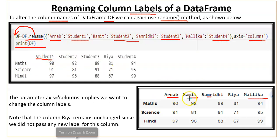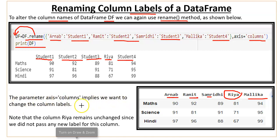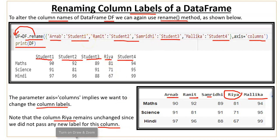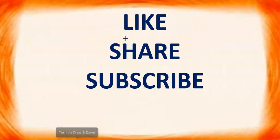The result shows: Arnav becomes Student1, Ramit becomes Student2, Samridhi becomes Student3, Malika becomes Student4. Riya remains unchanged since we didn't pass any new label for that column in the rename function dictionary. So with axis='index' you change row labels, and with axis='columns' you change column labels. If you like this video, please like, share, and subscribe to my channel. Thank you.